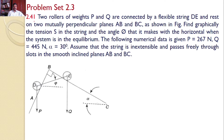Two rollers of weights P and Q are connected by a flexible string DE and rest on two mutually perpendicular planes AB and BC as shown in the figure. That means there are two rollers D and E, connected by a string DE, and placed on two perpendicular planes — AB and BC are perpendicular to each other.